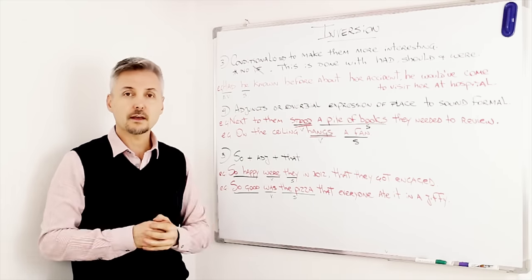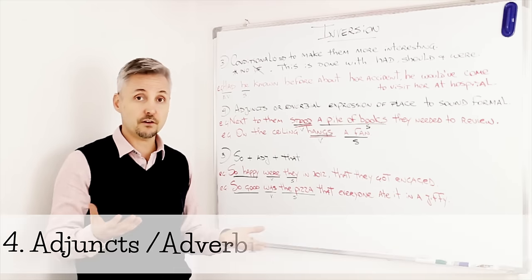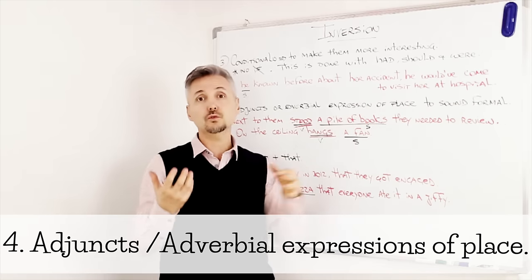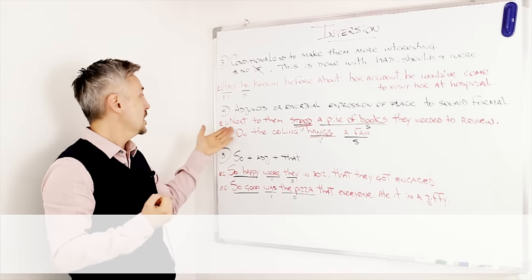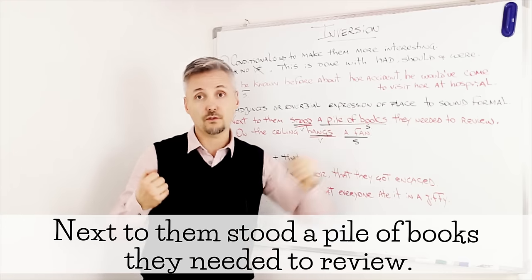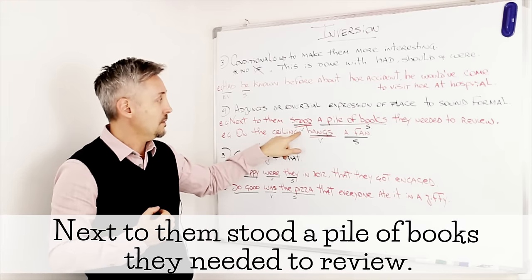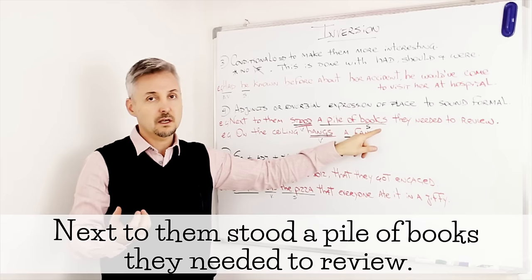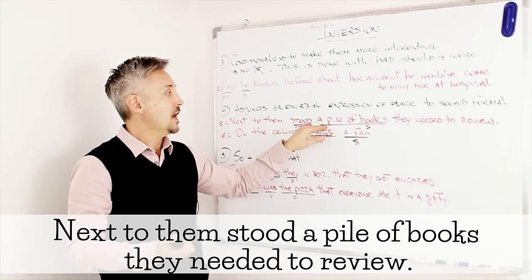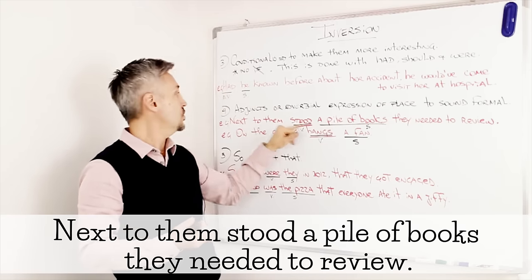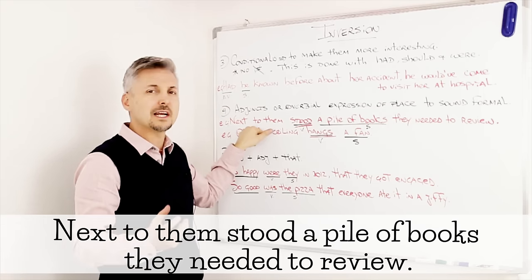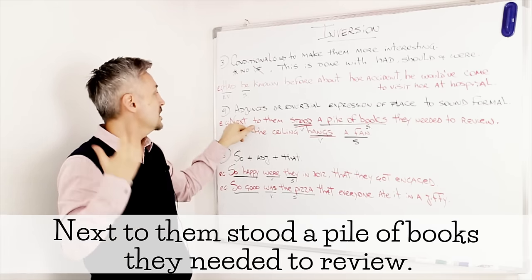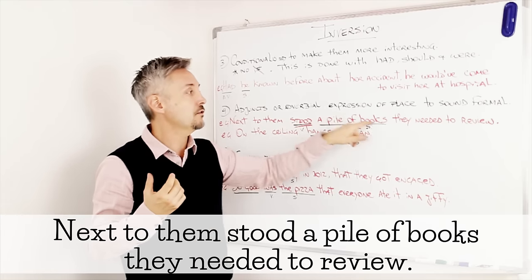Another type of situation where we can find inversion is with adjuncts or adverbial expressions of place to sound more formal. Like in my example. Next to them stood a pile of books they needed to review. So, we have the verb stood, or stand, and then a pile of books, which is the subject. How would it sound normally? A pile of books they needed to review stood next to them. That's it. But, to sound more formal, more sophisticated, we can say, next to them stood a pile of books they needed to review.